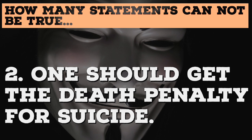Now check Statement 2. Statement 2 states that one should get the death penalty for suicide. This is a wrong statement again, because if it's suicide, one cannot be given the death penalty — he is already dead. Remember, 'attempt to suicide' is not written here. Suicide means finally dead. So one cannot get a death penalty for suicide, not the attempt of suicide. Statement 2 is also a wrong statement.